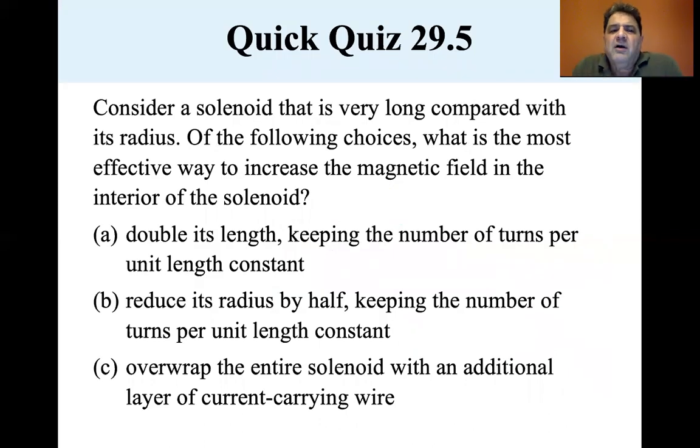Now consider a solenoid that is very long compared with its radius, and that's really what you need for a lot of these rules. If you were to have a wide diameter solenoid and very short, the equations don't quite match up. Of the following choices, what is the most effective way to increase the magnetic field in the interior of the solenoid: double its length keeping the number of turns per unit length constant, reduce its radius by half keeping the number of turns per unit length constant, or overwrap the entire solenoid with an additional layer of current carrying wire.